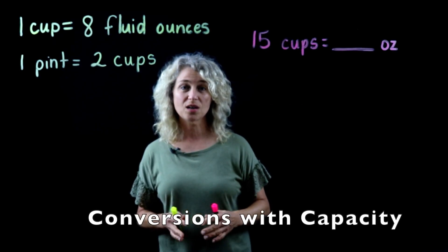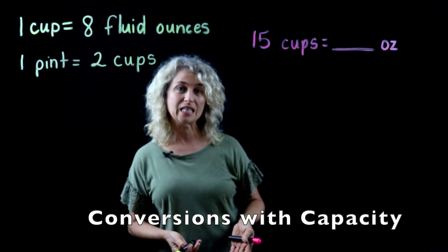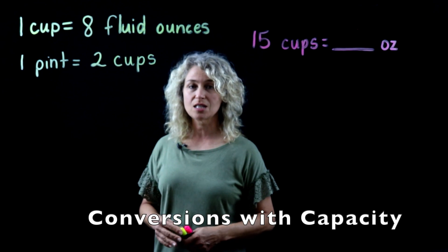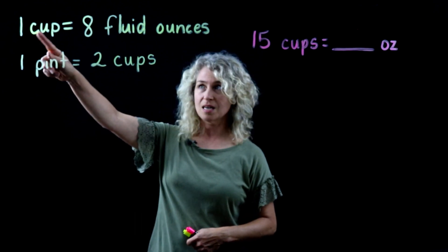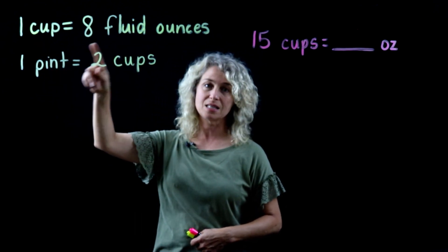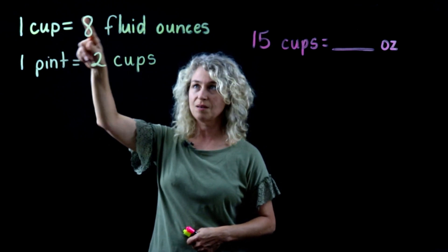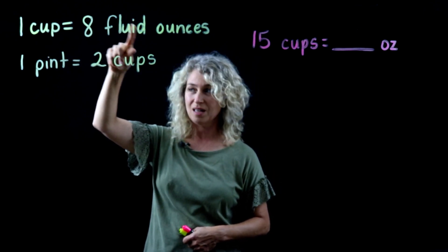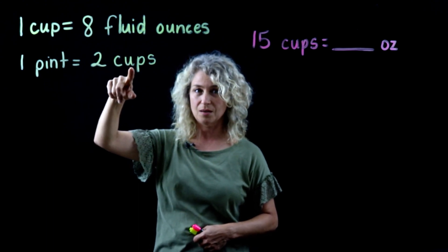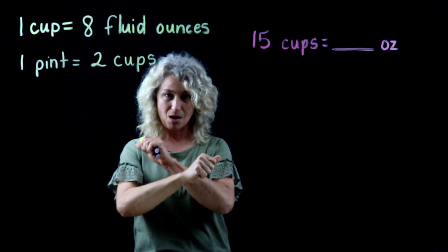Today we're going to work on conversions, specifically capacity. We're going to look at two conversions: cups to fluid ounces and pints to cups. Both are larger units moving to smaller units, so every time we go from larger to smaller, we're going to multiply.